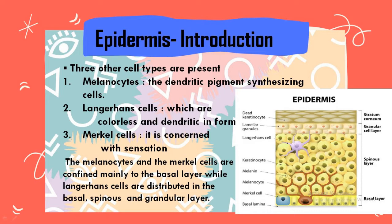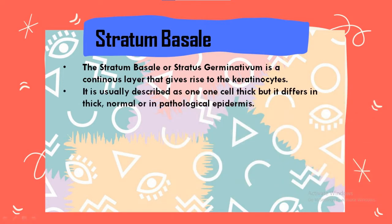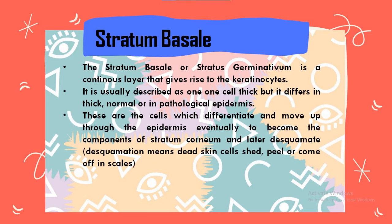The stratum basale, or stratum germinativum, is a continuous layer that gives rise to all keratinocytes. It is usually described as one cell thick, but it differs in normal or pathological epidermis. These are the cells that differentiate and move up through the epidermis, eventually becoming components of the stratum corneum, and later this results in dead skin cells which shed or come off in scales.